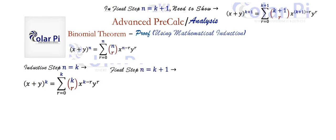I've skipped the basic cases where n equals one and two. So in the final step where n is equal to k+1, what we need to show is that this is true. We start with the left-hand side, which is (x+y) to the power k+1. First, we see that (x+y)^(k+1) is the same as (x+y) times (x+y)^k. That way we can invoke the inductive hypothesis by replacing (x+y)^k with the sigma expression it equals, since that's what we know it equals in the inductive step.